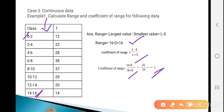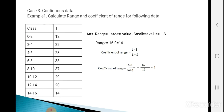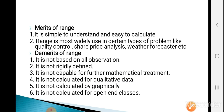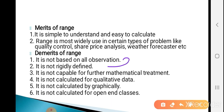This is the concept of range for ungrouped, grouped, and continuous data. Now the merits and demerits of range. Merits: it is simple to understand and easy to calculate. Range is most widely used in certain types of problems like quality control, share price analysis, and weather forecasting. Demerit: it is not based on all observations — it depends only on the largest and smallest values, so it is not rigidly defined and not capable of further mathematical treatment.